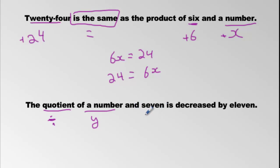And 7. So a number and 7. Now this looks like it could be a plus, right, because we know and means plus, but it doesn't in this case because it says it's a quotient. So we're not going to put plus. That would be wrong.